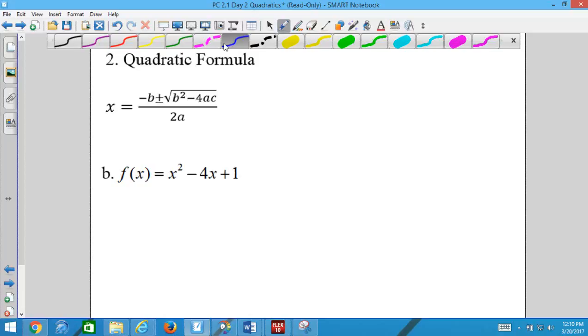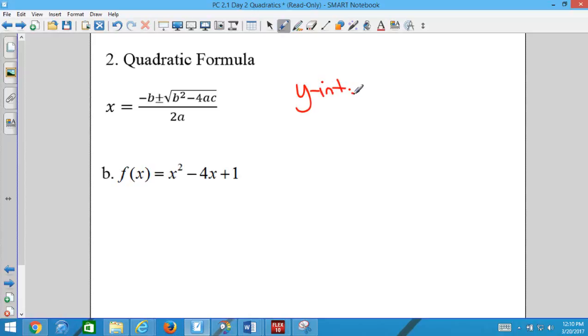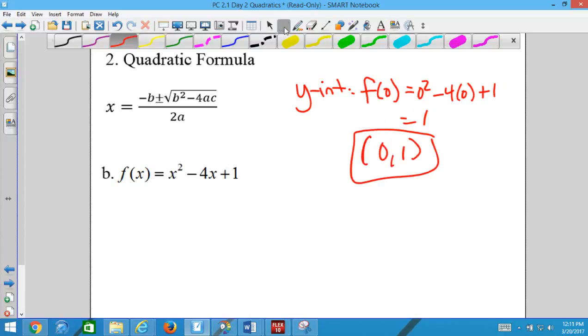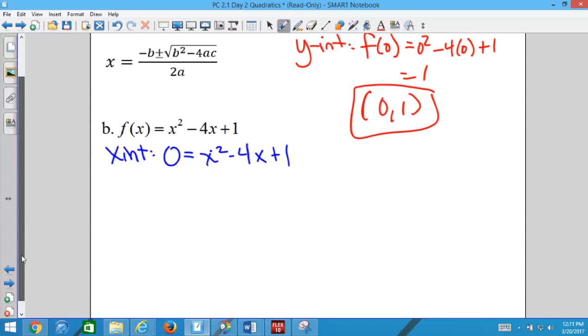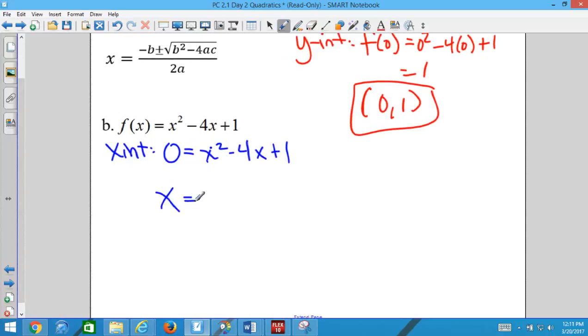All right. So quadratic formula. Let's do our y-intercept first. That one's really easy. The y-intercepts, plug in zero for x. And our y-intercept is zero. And we might try to factor that one, but there's no way that one factors. So we're going to use quadratic formula. x equals opposite b, plus or minus square root b squared minus 4ac, all over 2a.